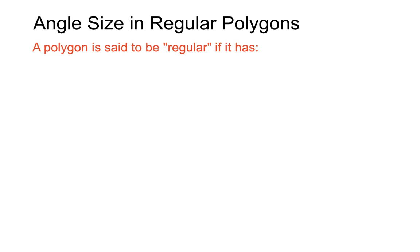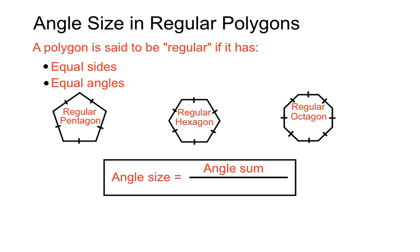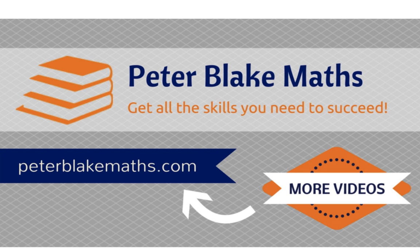So let's recap here. The word regular meant a special thing for polygons. It meant that we've got a shape here with equal sides and equal angles. And to find the size of each angle for the major polygons here, the pentagon, the hexagon, and the octagon, we can take the angle sum of that particular polygon and divide it by how many sides we've got. And there we have it, to find the angle size in regular polygons. Thanks for listening, PeterBlakeMaths.com. Catch you next time.